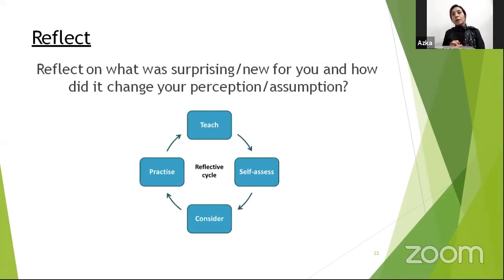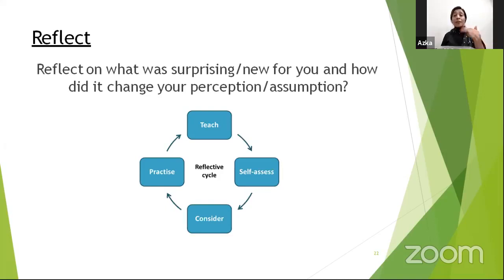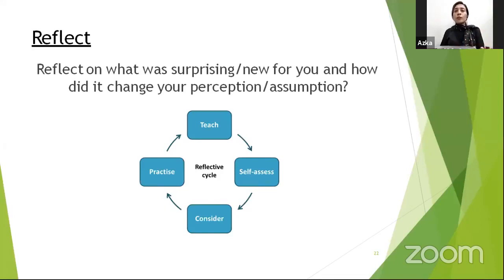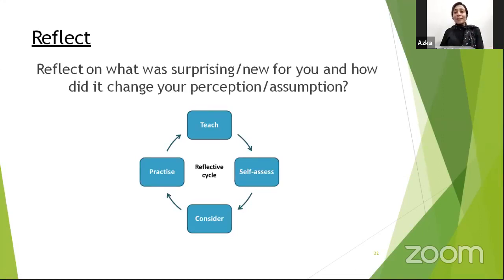To reflect — once you have completed your action research and reached conclusions, the next step is to reflect on what was surprising or new for you and how it changed your perception. If something went very well in your classroom, you need to practice it, adapt it, and make it a habit by performing it again and again. If you think something is not good for your students but it's already a habit, you need practice to remove it.